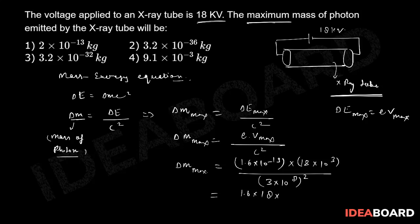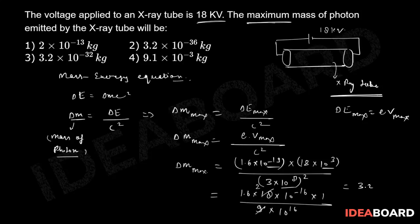1.6 × 18 × 10^-19 × 10^3 gives us 10^-16. Dividing by 9 × 10^16, this simplifies to approximately 3.2 × 10^-32 kg.